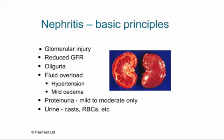Let's review the basic principles behind nephritis. Nephritis is all about glomerular injury — the GFR falls, creatinine rises, and the patient becomes oliguric. As a consequence of voiding less, they experience fluid overload, leading to hypertension, mild edema, raised JVP, hepatomegaly. The main point is that these patients are hypervolemic, with a really full circulation.